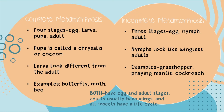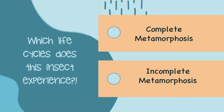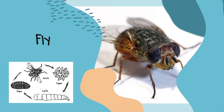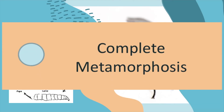Which life cycle does this insect experience — complete metamorphosis or incomplete metamorphosis? Let's see if you know. The first insect is the fly. There's a hint on the bottom left hand corner. If you said complete metamorphosis, you are correct.